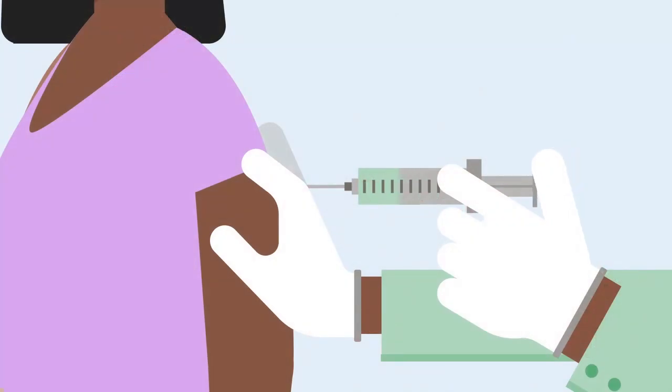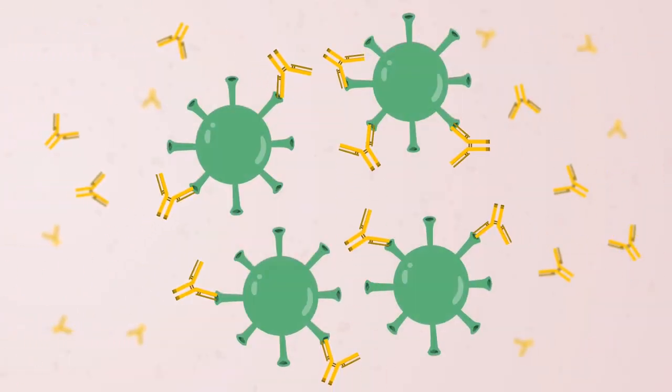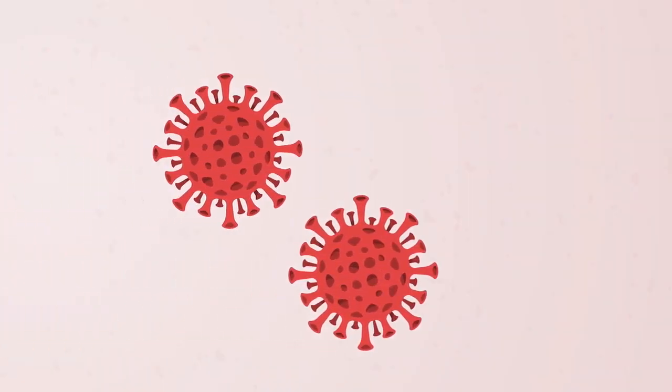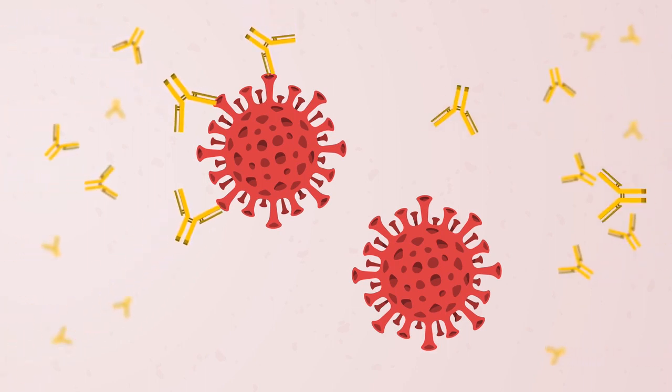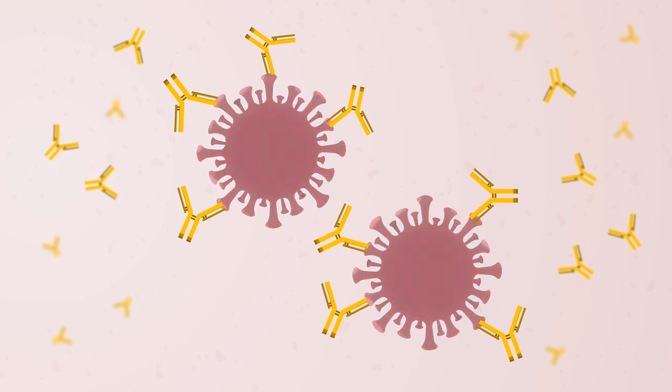Vaccines can be made differently, but they all work the same way. They train and prepare the special cells in our bodies to attack new viruses they haven't encountered yet. This means that if someone catches a virus after they have been vaccinated against it, their body recognizes the virus immediately. Their special cells can fight the virus straight away before it has time to reproduce and make them sick.